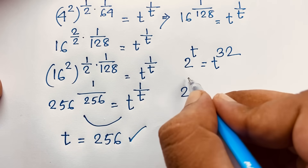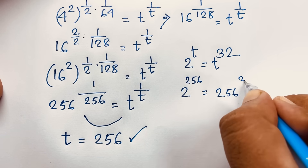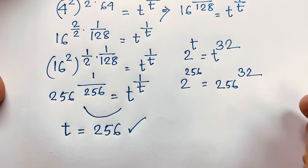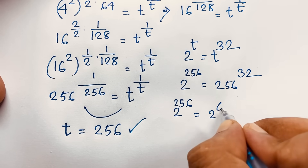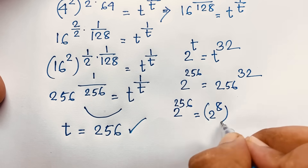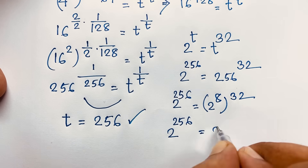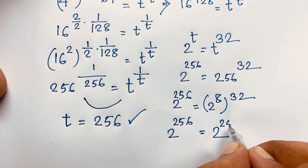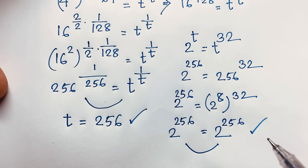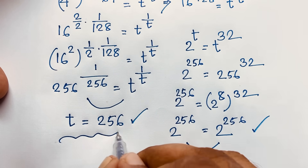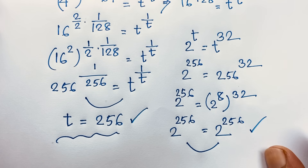Here, 2 to the power 256 should equal 256 to the power 32. We can write 2 to the power 256 as 2 to the power (8 times 32), which equals 256 to the power 32 — since 2 to the power 8 is 256. You can see the left-hand side and right-hand side are both equal, confirming that t equals 256 is our final solution.